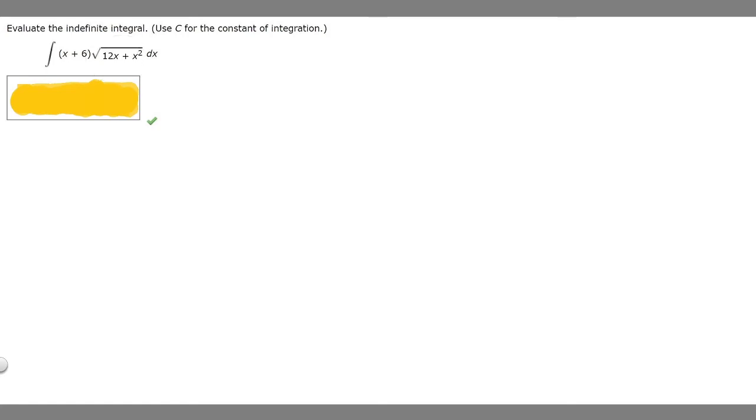The first thing we have to do since we're using u-substitution is find out what u is going to be. If we look here, we have the square root and what's inside we have 12x + x squared. If you take the derivative of that, we get a variable raised to the x and we have like x to the 1 here, so that's a good indication we should use it as u.